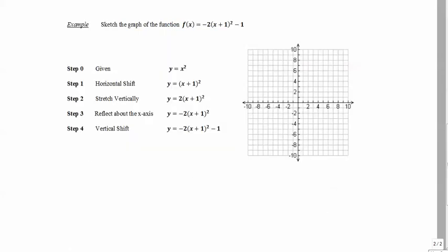For example, sketch the graph of f(x) = -2(x + 1)² - 1. The first thing we do is take the base function y = x² and graph it. This gives us the parabola with the general points (x, y) that we'll transform step by step.